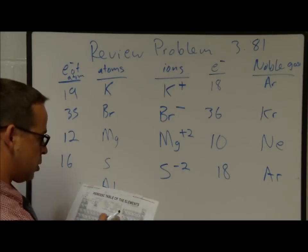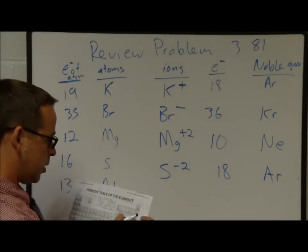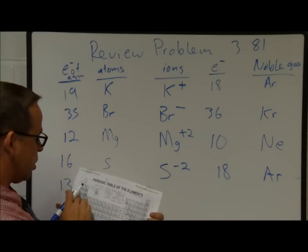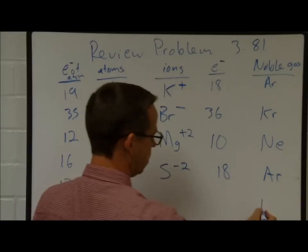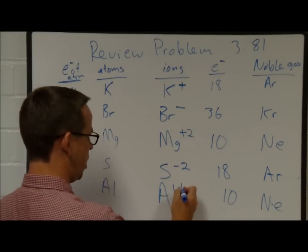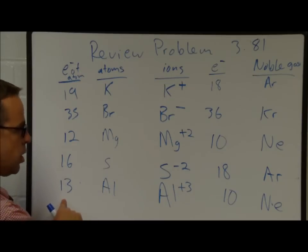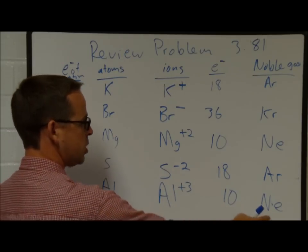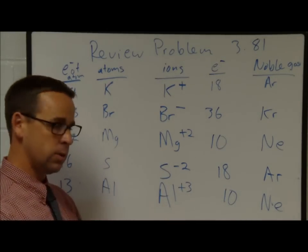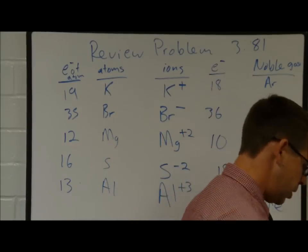Aluminum starts with 13 electrons. It's closer to losing 3 electrons and going back to neon's configuration (10 electrons) than gaining 5 to reach argon. Losing 3 electrons gives aluminum a plus 3 charge: Al³⁺. That is problem 381.